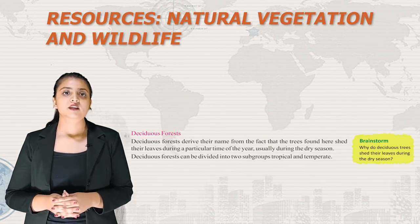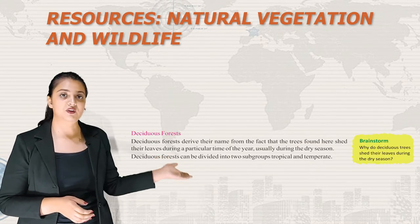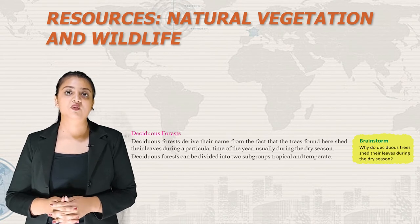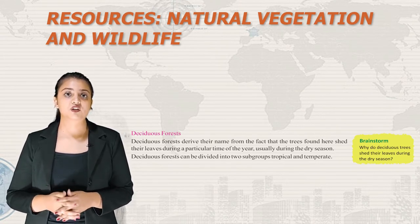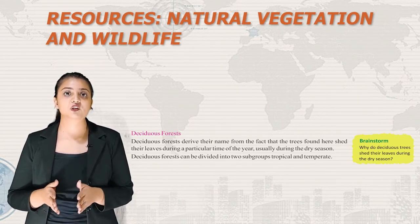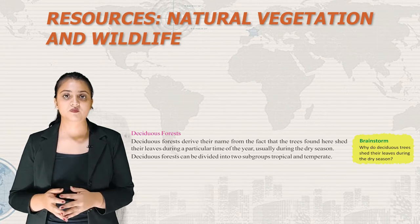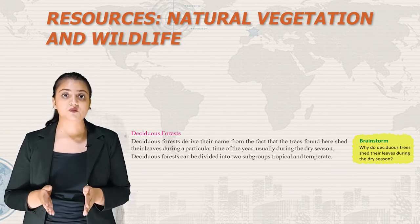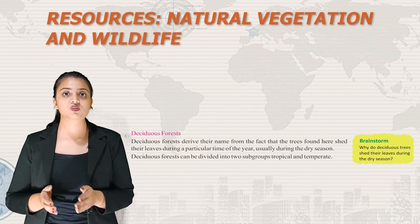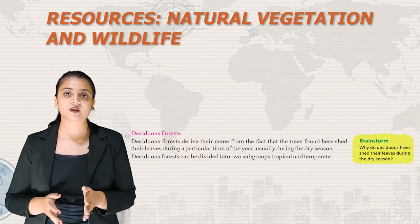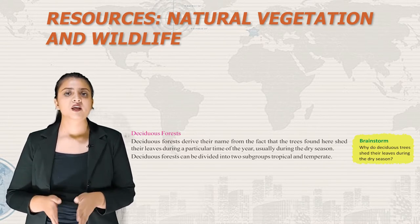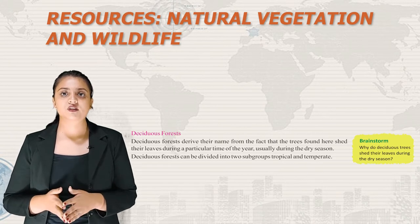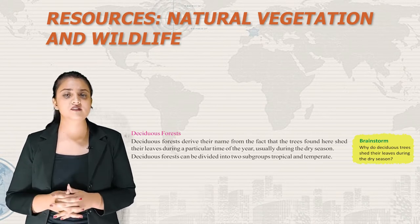Deciduous forests derive their name from the fact that trees found here shed their leaves during a particular time of the year, usually during the dry season. Deciduous forests can be divided into two subgroups: tropical and temperate. Let's brainstorm: why do deciduous trees shed their leaves during the dry season?